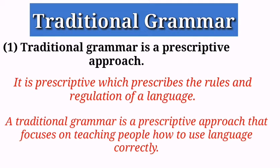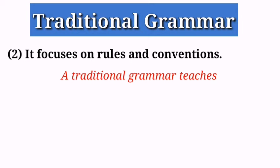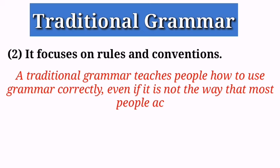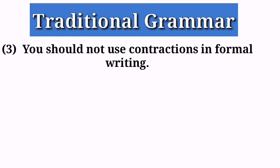Traditional grammar focuses on rules and conventions. It teaches people how to use grammar correctly, even if it is not the way that most people actually use language. It gives emphasis on conventions and set rules. For example, one traditional rule is that you should not use contractions in formal writing. Contractions are words formed by combining two words and omitting one or more letters — for example, 'I'm' is a contraction of 'I' and 'am'.